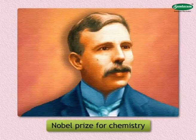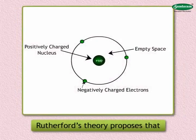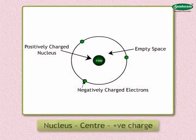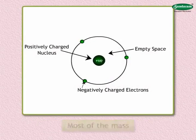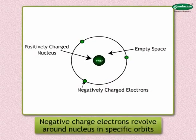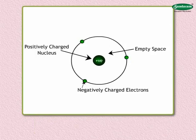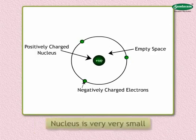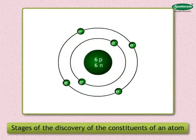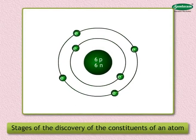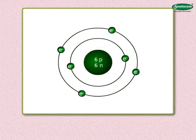These inferences gave rise to Rutherford's theory of the structure of atoms, for which he was awarded the Nobel Prize for Chemistry. To summarize, Rutherford's theory proposes: one, the nucleus at the center of the atom has a positive charge and most of the mass of the atom is concentrated in the nucleus; two, the negatively charged electrons revolve around the nucleus in specific orbits; three, in comparison with the size of the atom, the nucleus is very very small.